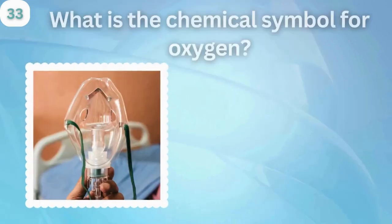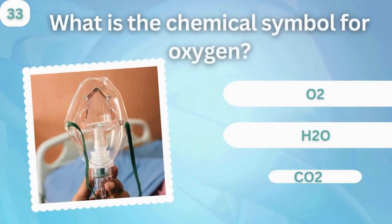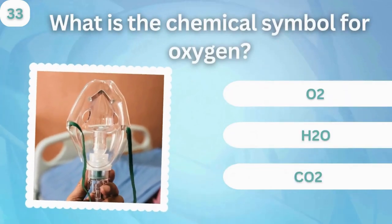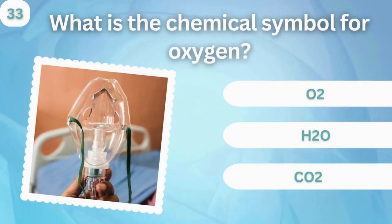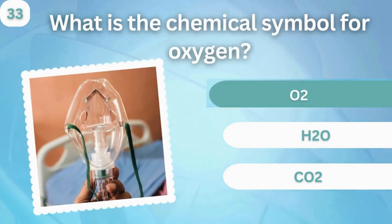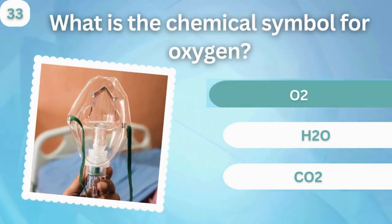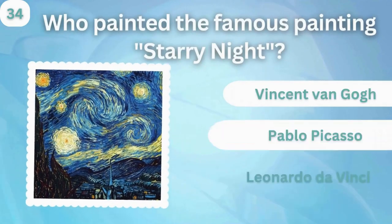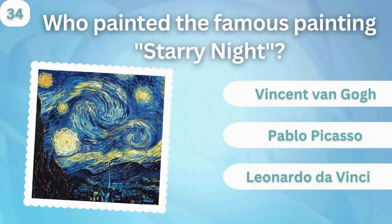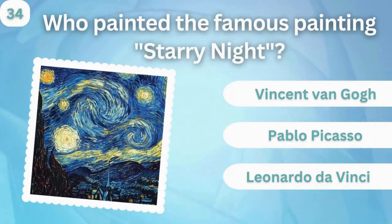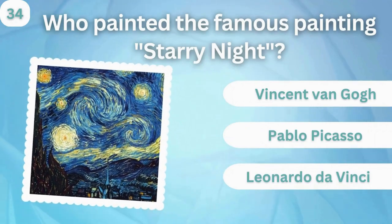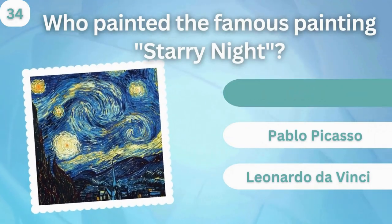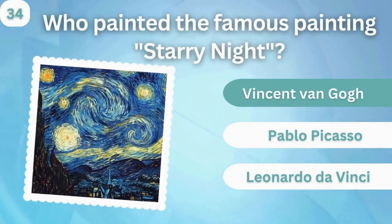What is the chemical symbol for oxygen? O2, H2O, or CO2? O2. Who painted the famous painting Starry Night? Vincent Van Gogh, Pablo Picasso, or Leonardo da Vinci? Vincent Van Gogh.